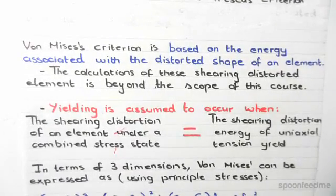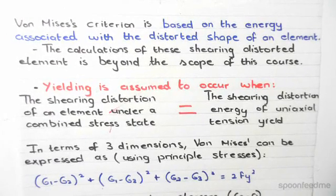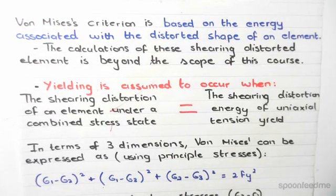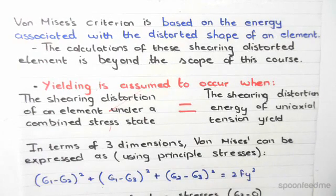So in terms of three dimensions including out of plane stresses, von Mises can be expressed as: principal stress 1 minus 2 squared plus principal stress 1 minus 3 squared plus principal stress 2 minus principal stress 3 squared equals 2fy squared.